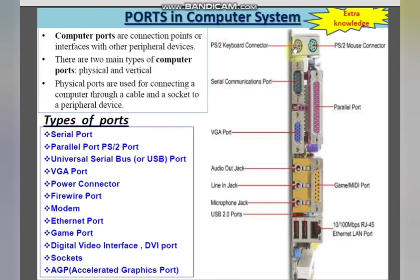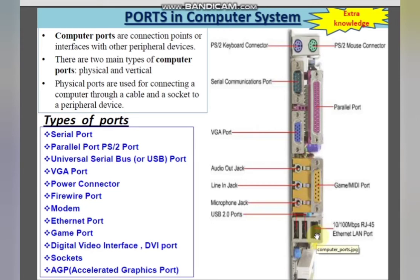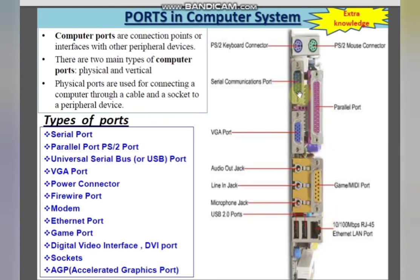Other physical ports at the back of the system include audio out jack, line-in jack, and microphone jack for connecting speakers and microphones. USB 2.0 ports are also present. The Ethernet or LAN port allows you to connect your system to the internet by inserting an RJ45 connector with a patch cord, which connects to a switch, hub, or home router for a wired internet connection.